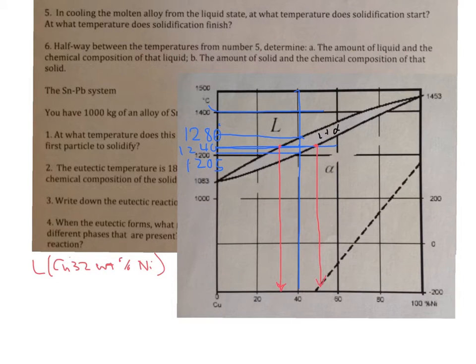Now, the alpha is, as we can see from here, is about 52. The alpha is copper, 52 weight percent nickel.